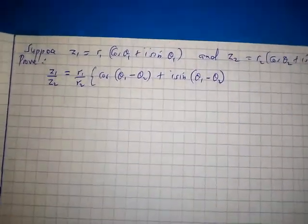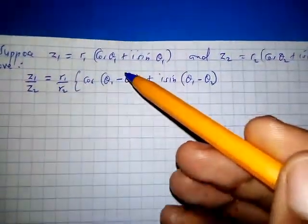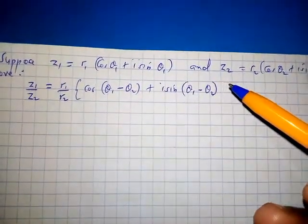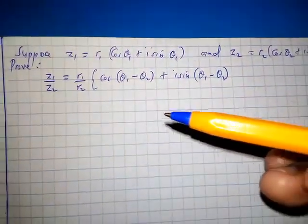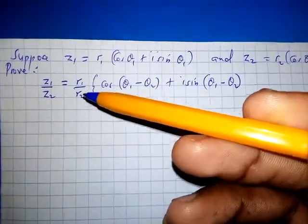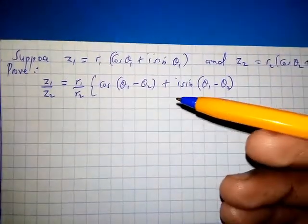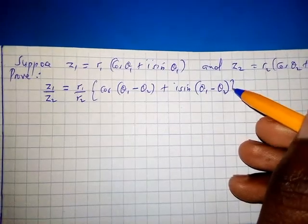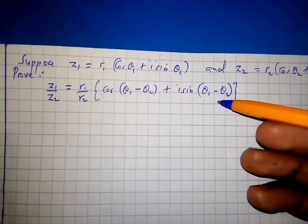Hello everyone, welcome to my YouTube channel. Suppose z1 equals r1 times (cos theta1 plus i sine theta1) and z2 equals r2 times (cos theta2 plus i sine theta2). Prove that z1 over z2 equals r1 over r2 times (cos(theta1 minus theta2) plus i sine(theta1 minus theta2)).